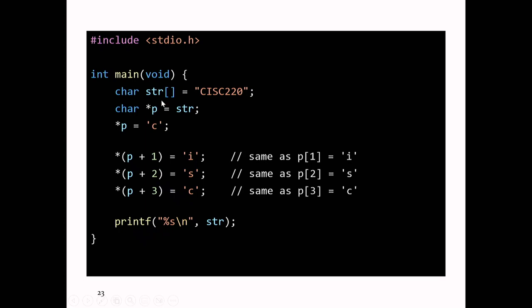The array str is drawn on the board. You can change those characters. When you write str square brackets equals the string literal, C copies the characters from the string literal into the array. That array has indexes 0 through 7, so the length of the array is 8 — seven characters in the string CISC220, and then one more for the null terminator, the slash 0 or 0 character.